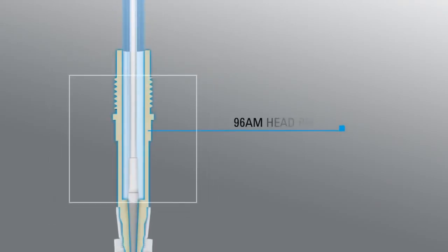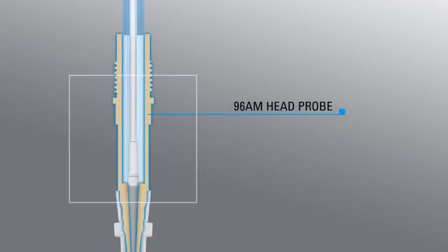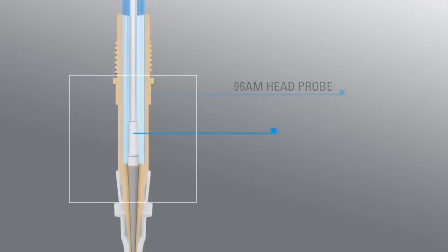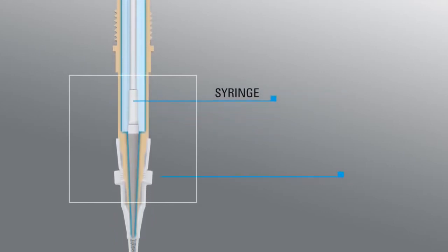The liquid handling technology consists of a syringe probe designed to form a tight seal with the AssayMap cartridge, an ultra-low dead-volume syringe, and the AssayMap cartridge.